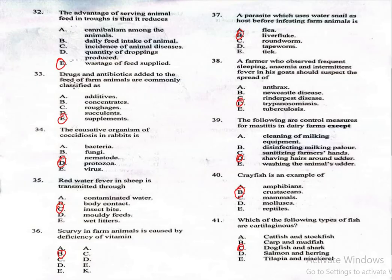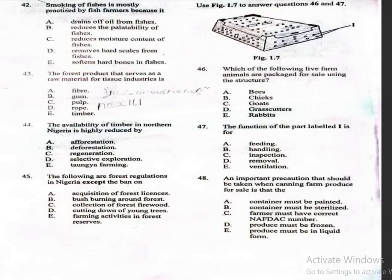Question 42: Smoking of fishes is mostly practised by fish farmers because it: A, drains off oil from fishes; B, reduces the palatability of fishes; C, reduces moisture content of fishes; D, removes hard scales from fishes; E, softens hard bones in fishes. The correct answer is C, reduces moisture content of fishes.